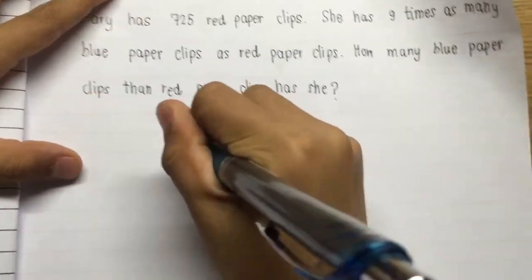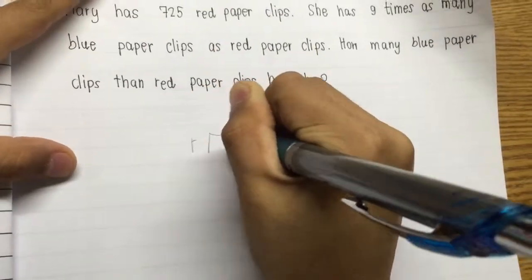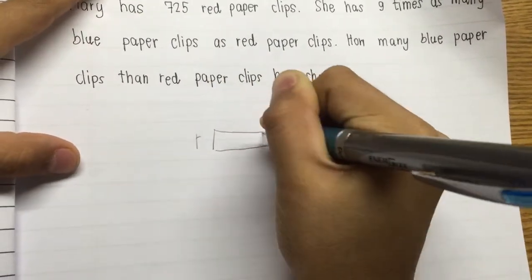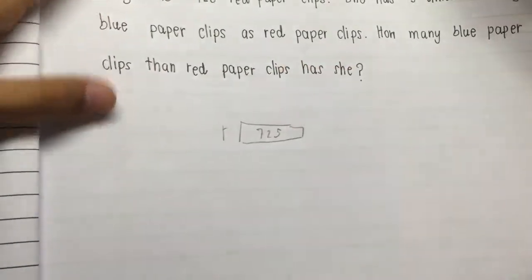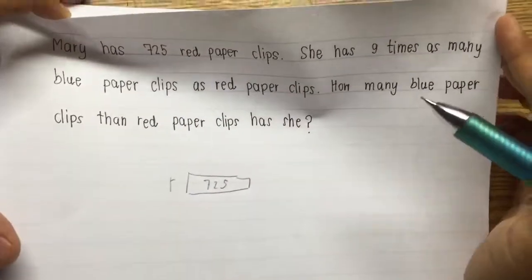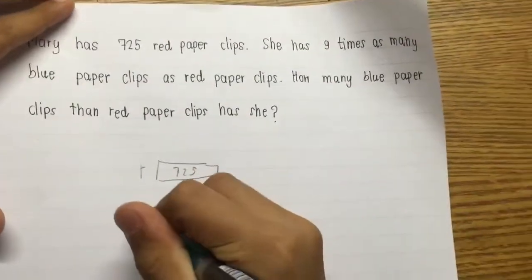Mary has 725 red paperclips. Next, she has 9 times as many blue paperclips as red paperclips. Blue.